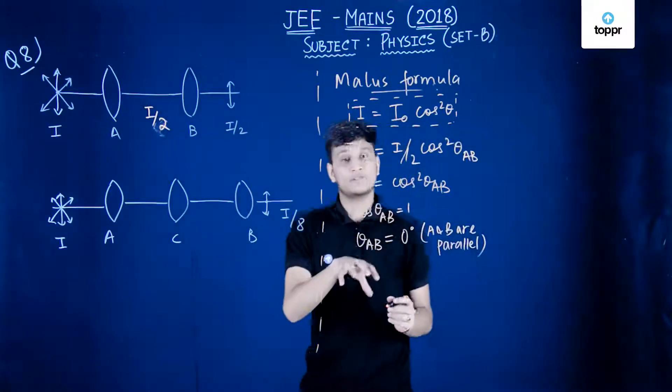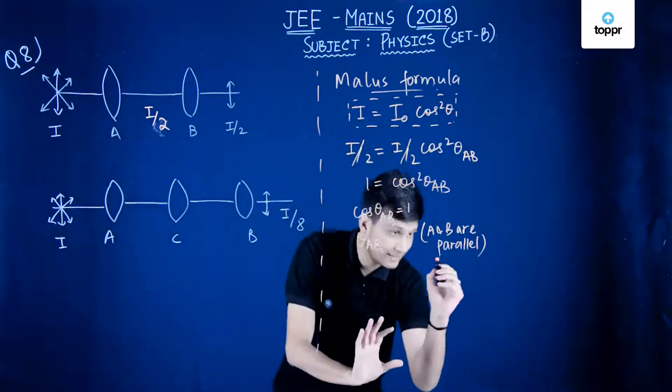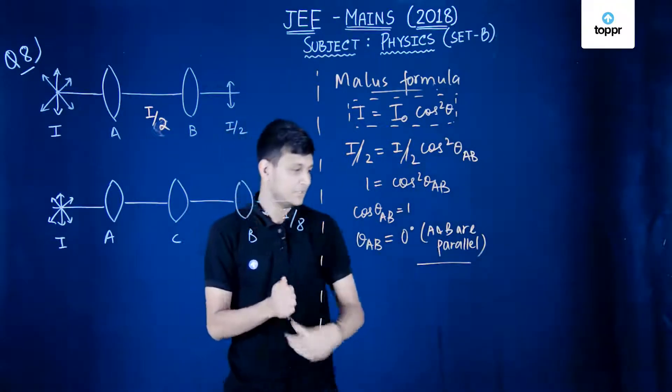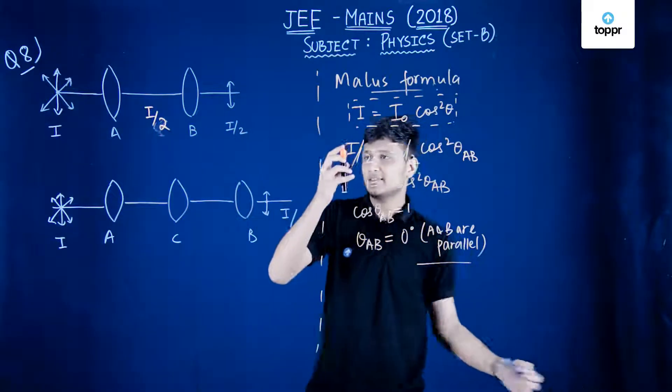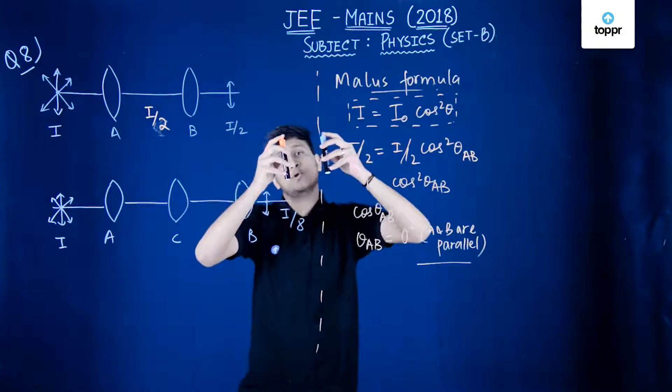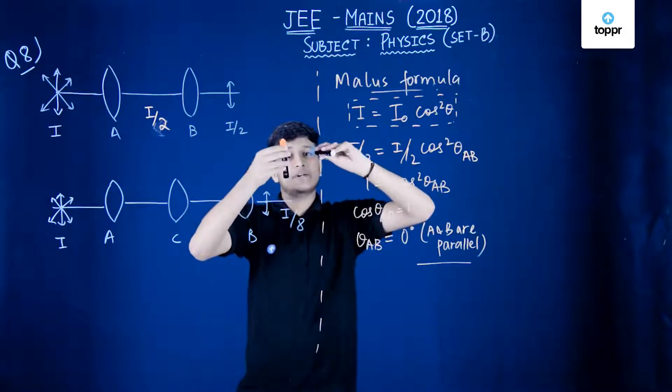Extremely important information that we gathered from here, that A and B are parallel. So if A is like this, B is also like this. These are the two polarizers, they don't have any angle between them.